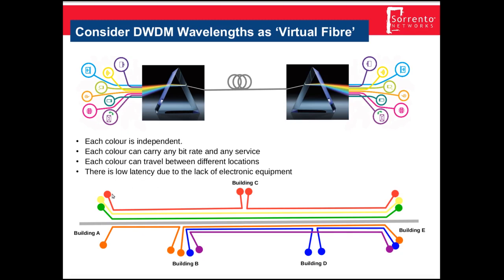This gives rise to the concept of virtual fibre. Each colour is independent, can carry any bit rate or service, and can travel between different locations without any electronics being involved. Light coming in travels through the various prisms and comes out again at client equipment. A server or routing device on the yellow channel comes out at building E, on the red channel at building C, or on the orange channel at building B — traffic distribution in the optical layer with no electronics required.